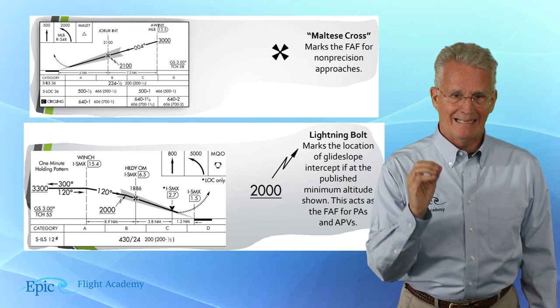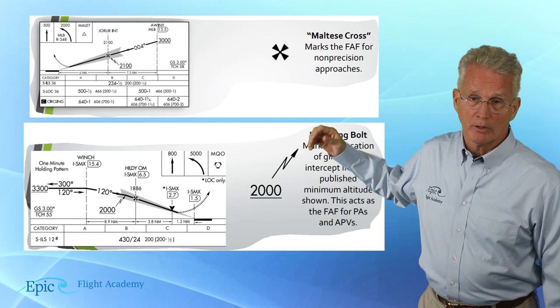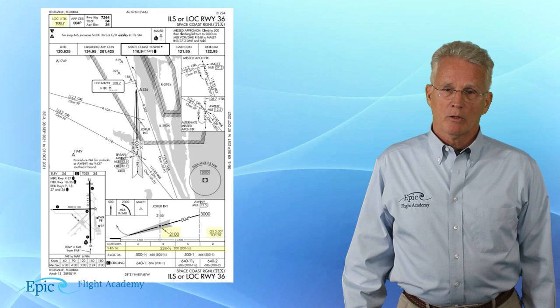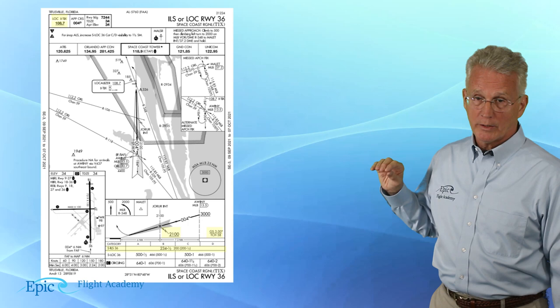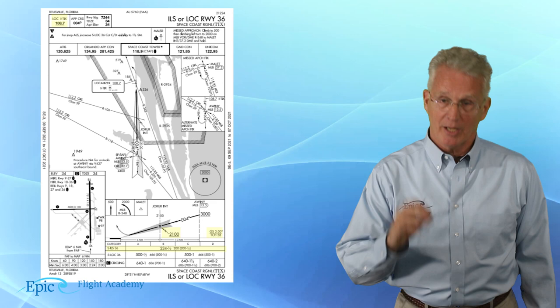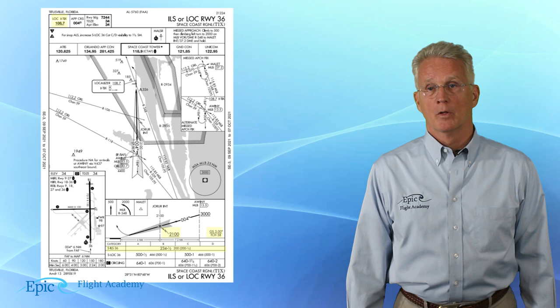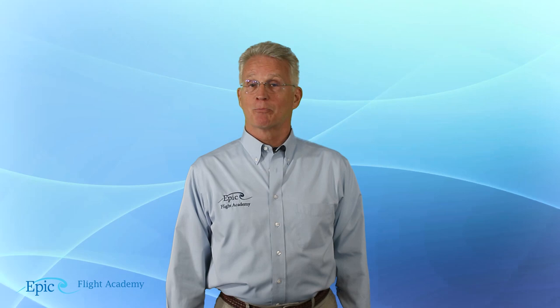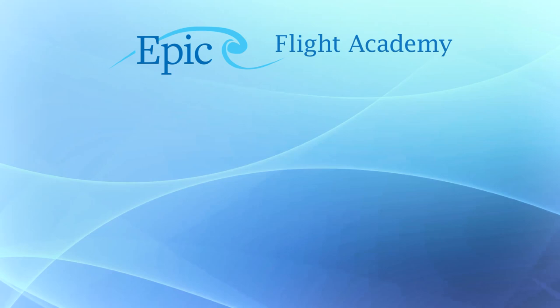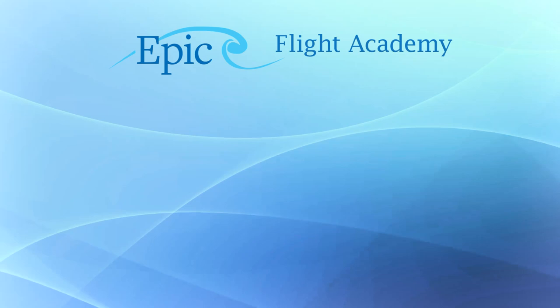Finally, let's take a look at the bottom of the profile view where we see minimums. Looking at the straight-in ILS 36, you can see that no matter what the category — A, B, C, or D — the decision altitude and visibility are the same in this case for all four categories. Well folks, that just about wraps up the ILS presentation. Join us next time.